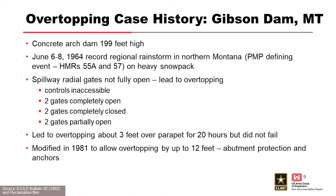Gibson Dam was constructed in 1928. It's a concrete arch dam that's 199 feet high. June 6 through 8, 1964, there was a record regional rainstorm in northern Montana — one of the PMP-defining events for HMR 55A and HMR 57 — and that rainfall fell on heavy snowpack. Spillway radial gates were not fully open, which led to overtopping, and the controls were inaccessible. Two of the gates were completely open, two were completely closed, and two were partially open. It overtopped by about three feet over the parapet wall for 20 hours, but it did not fail.